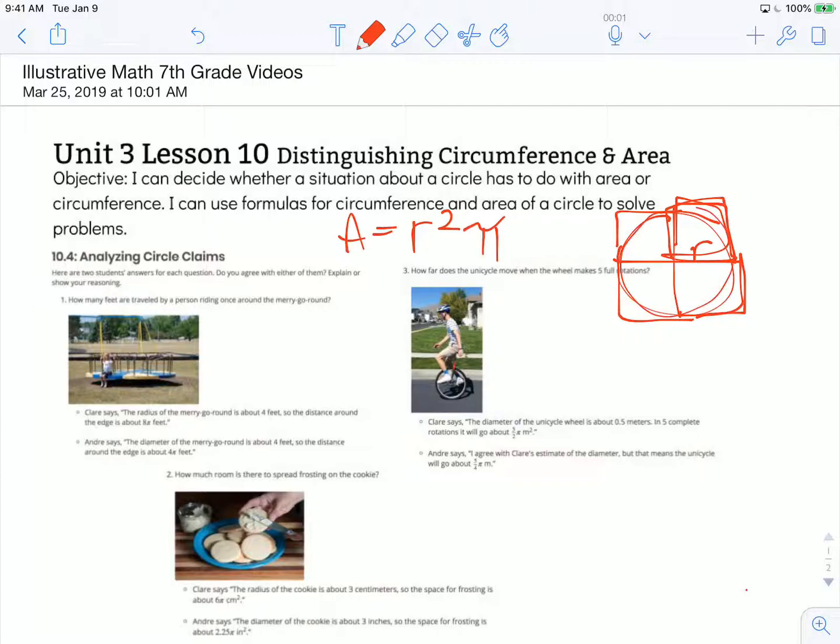For circumference, that's the distance around the circle. So we are looking at how far it takes to go all the way around. Well, it's pretty much this diameter. If we took that, peeled it, and wrapped it around, we'd need about 3 of those. So we're going to take diameter and multiply it by pi.